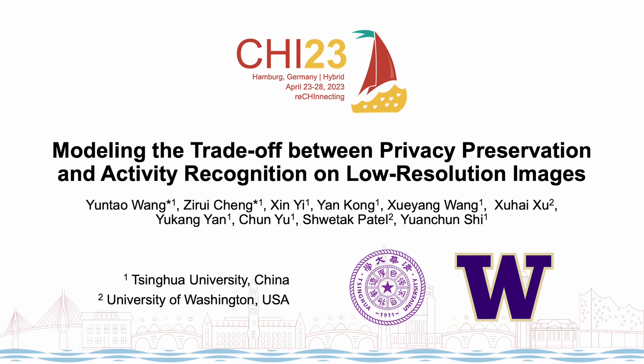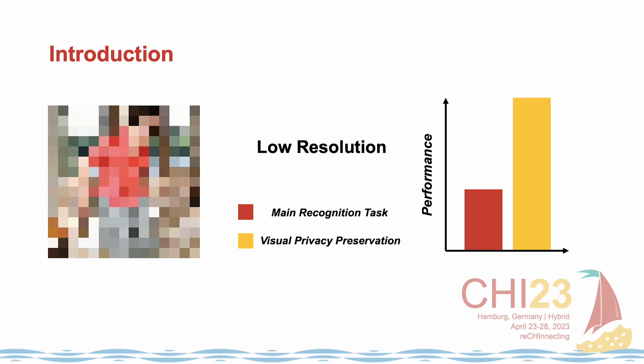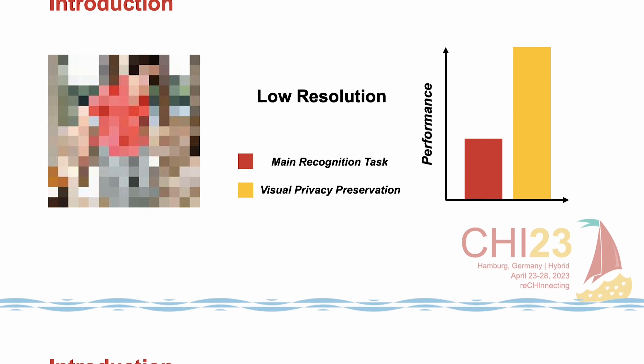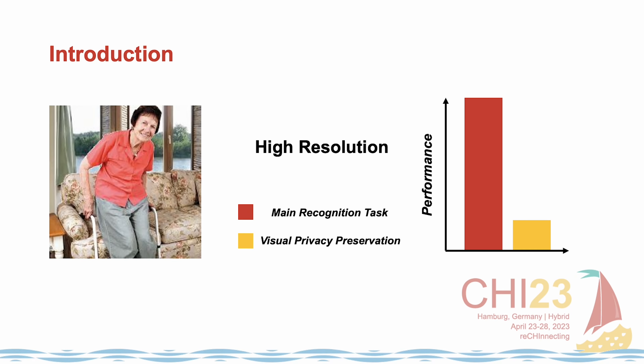We present a method to model the trade-off between privacy preservation and activity recognition on low-resolution images. There is a universal need to balance resolution in privacy preservation and activity recognition.